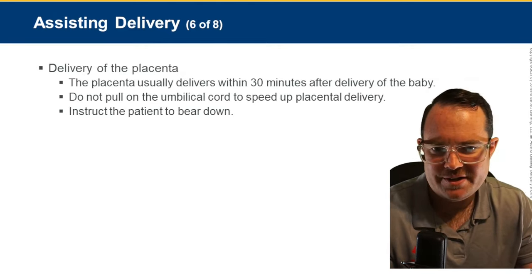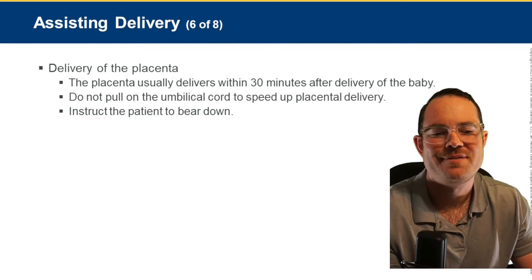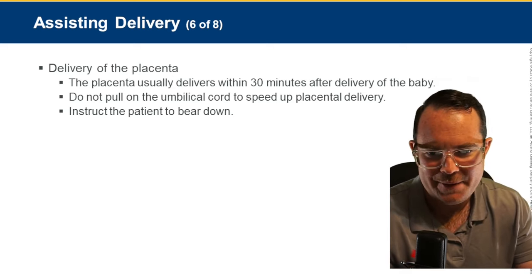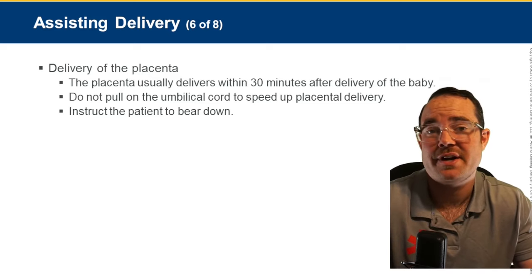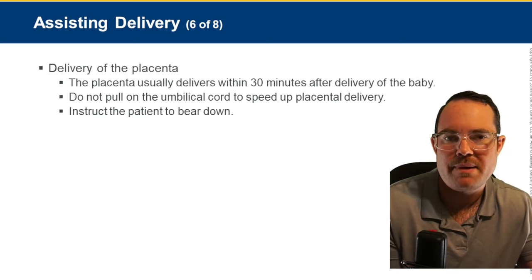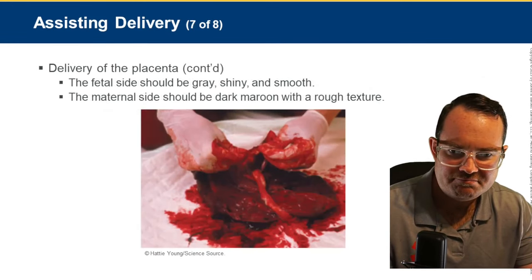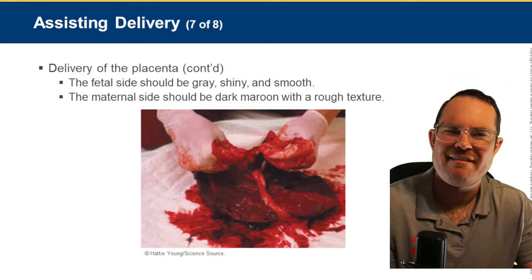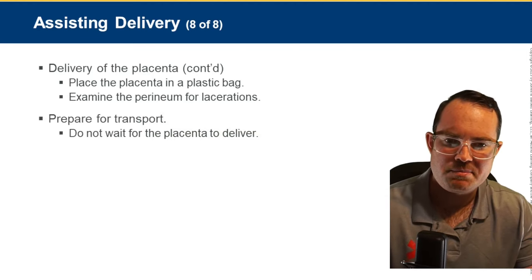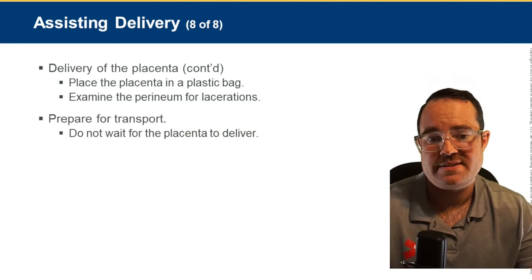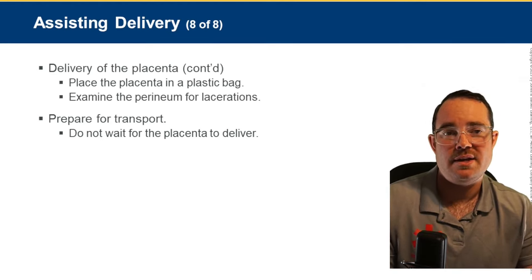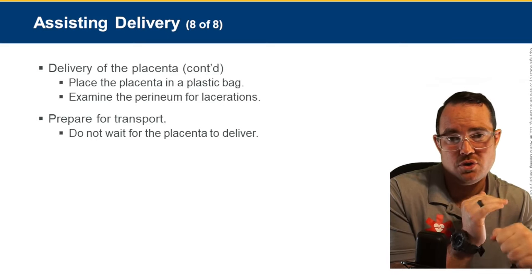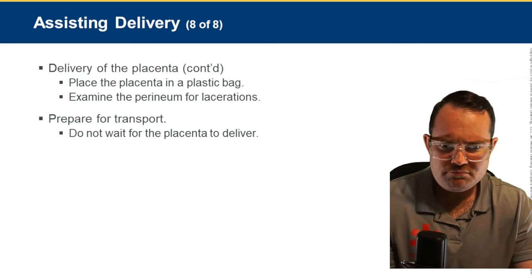The placenta delivers within 30 minutes after delivery. Do not pull on the umbilical cord to speed the process. Instruct the patient to bear down. The fetal side of the placenta is gray, shiny, and smooth; the maternal side is dark and rough. Place the placenta in a plastic bag. Examine the perineum — the space between the vagina and anus — for lacerations; if the baby was large, this area may tear and require direct pressure.